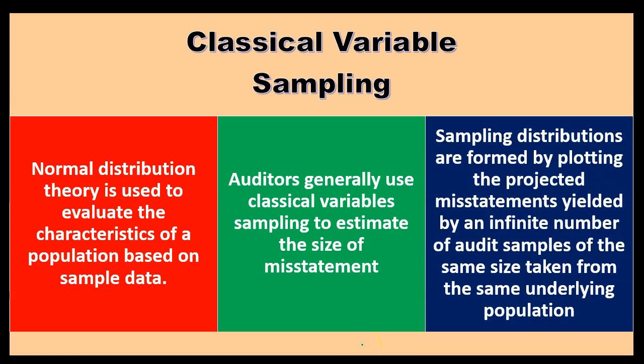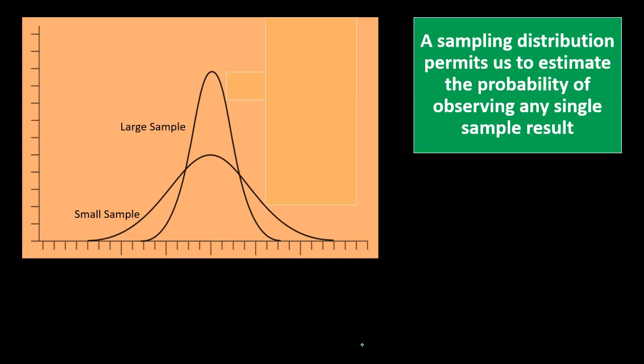Sampling distributions are formed by plotting the projected misstatements yielded by an infinite number of audit samples of the same size taken from the same underlying population. This is our standard distribution type curve that we would expect to see.